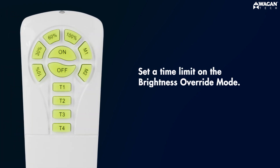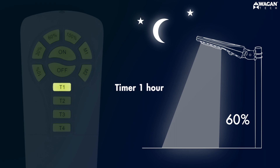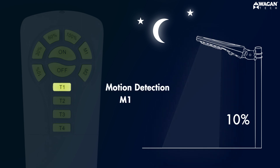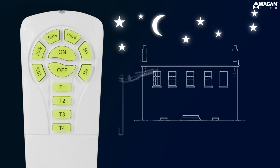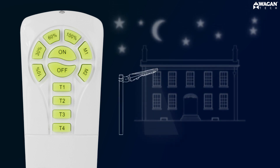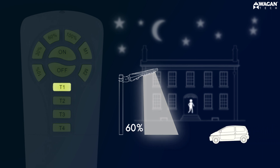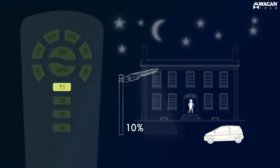Timer mode is used to set a time limit on the brightness override mode. For example, T1, or timer one hour, will place the light at your desired brightness level for one hour, after which it will default back to the motion detection M1 mode. Let's say that you're expecting a friend over in the next hour and you want to illuminate your driveway for them. Simply press the desired brightness setting — we'll select sixty percent for our example — and then press the T1 button. The light is now set to remain at sixty percent brightness for the next hour. After that it will default back to the motion detecting M1 mode.